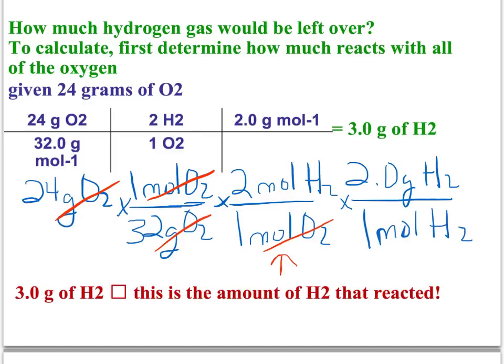Remember we've got a two to one ratio here. The only time you use a ratio from the balanced equation is when you're going from moles of one substance, oxygen, to moles of another substance, hydrogen. And so now we have moles of hydrogen and change that to grams. And we do all this and we end up with 3.0 grams of hydrogen.